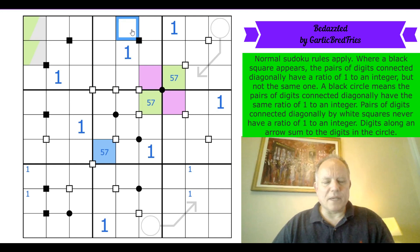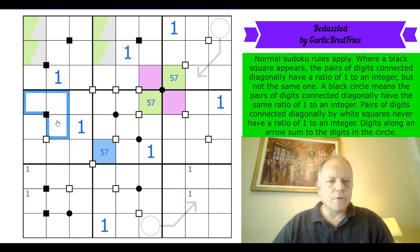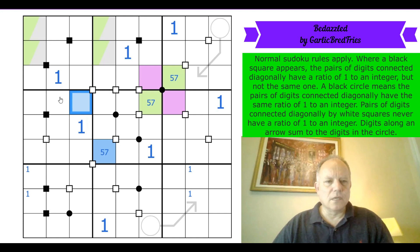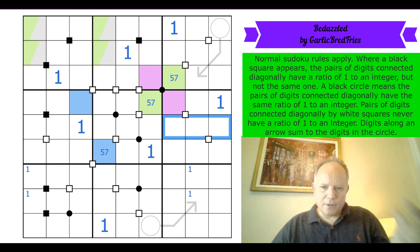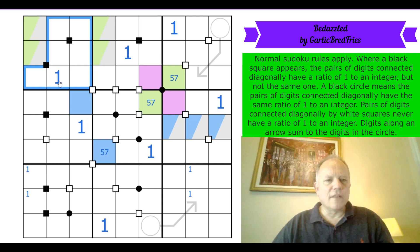Green can't go in certain cells because the opposite cell can't be a one. One of those is green and one of those is blue. These can't be blue because of where they are on the black dot, nor can this because it can't be opposite a one. So that's actually a green-blue pair.